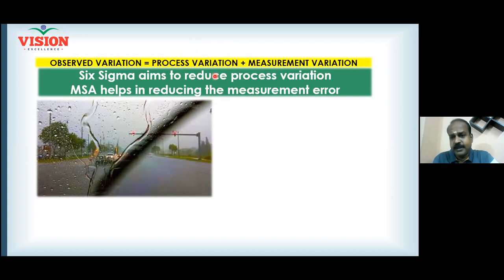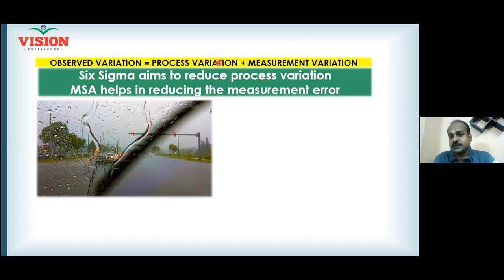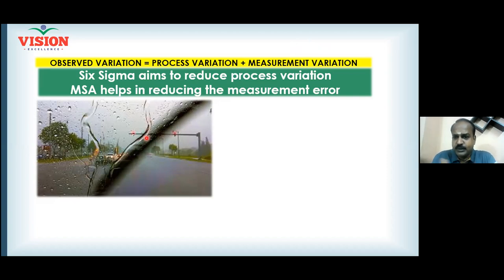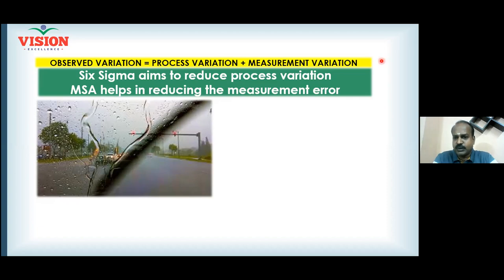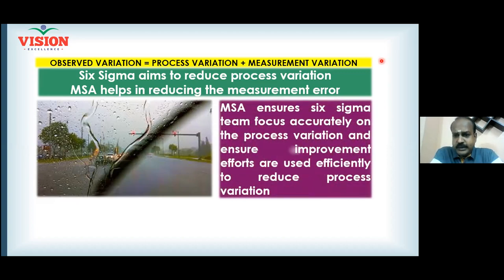That is why it is important to understand measurement variation before addressing process variation — controlling measurement variation helps you focus fully on process variation. It is like using a wiper when it is raining: the wiper clears the water droplets so you can regain focus on the road. Similarly, when you conduct a Gauge R&R study, it wipes out measurement error so you can focus properly on the problem.